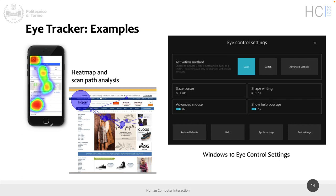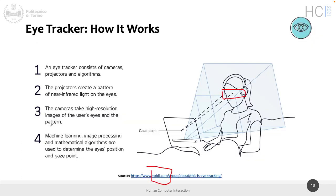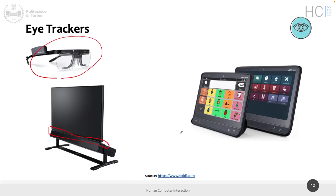Dwell is slower than the switch option but allows you to do everything with your eyes alone. This is the Eye Control setting in Windows 10 and probably Windows 11, which automatically appears when you attach an eye tracker. This could be done alone or in combination with other input modalities like mouse, keyboard, or touchscreen for multimodality.